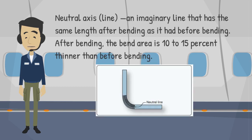Neutral axis (line): an imaginary line that has the same length after bending as it had before bending. After bending, the bend area is 10–15% thinner than before bending.